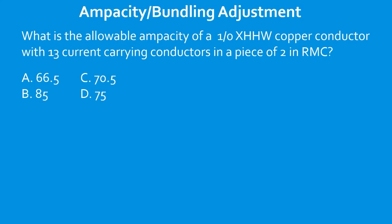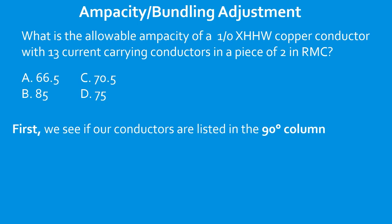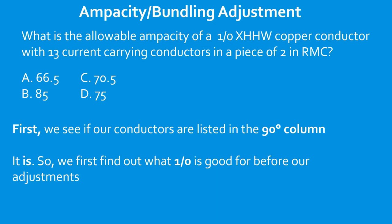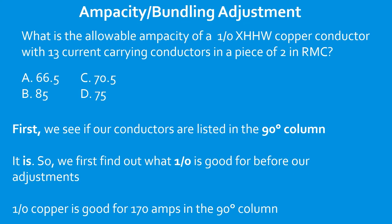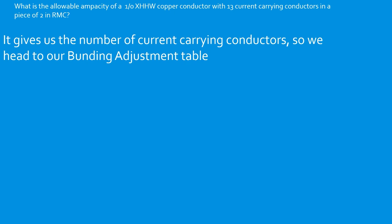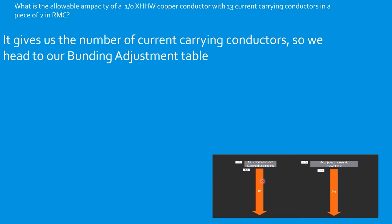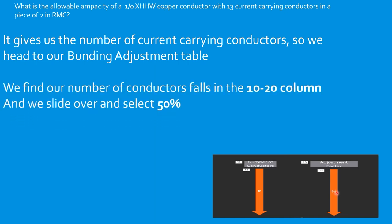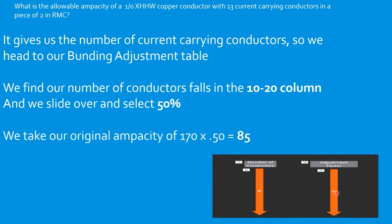Question: What is the allowable ampacity of a 1/0 XHHW copper conductor with 13 current-carrying conductors in a piece of 2-inch RMC? Confirm XHHW is in the 90°C column. A 1/0 copper is good for 170 amps in the 90°C column. Thirteen conductors — go to the bundling adjustment table and find the adjustment factor: it is 50%, or 0.50. So: 170 × 0.50 = 85 amps. Select B.